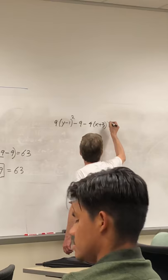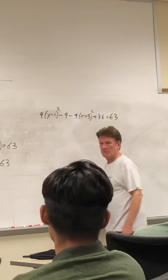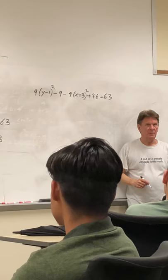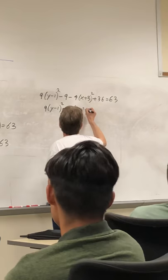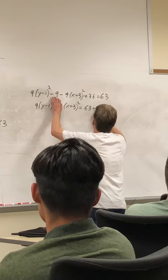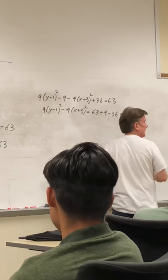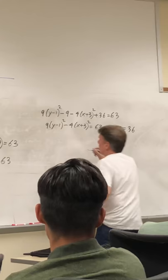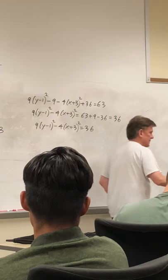Negative 4 times negative 9. Then we're just going to move the 9 and the 36. So we're going to get 63 plus 9 minus 36. So we have 9 times y minus 1 squared plus 4 times x plus 3 squared. And we're starting to see this. Now we're real close.